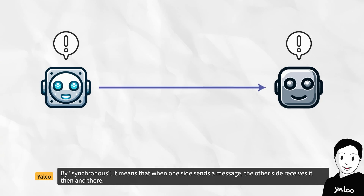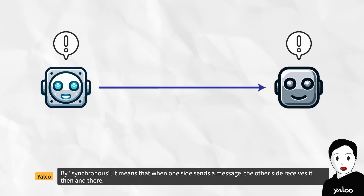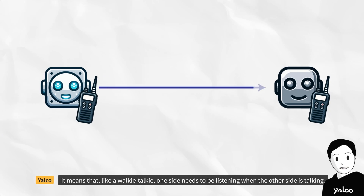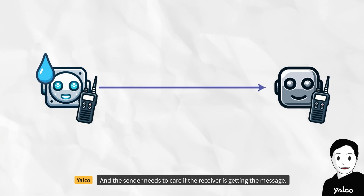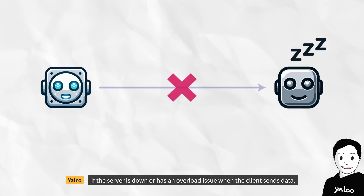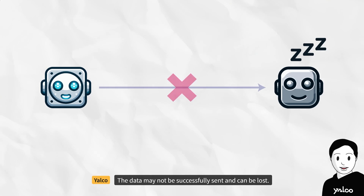By synchronous, it means that when one side sends a message, the other side receives it then and there. Like a walkie-talkie, one side needs to be listening when the other side is talking, and the sender needs to care if the receiver is getting the message. If the server is down or has an overload issue when the client sends data, the data may not be successfully sent and can be lost.